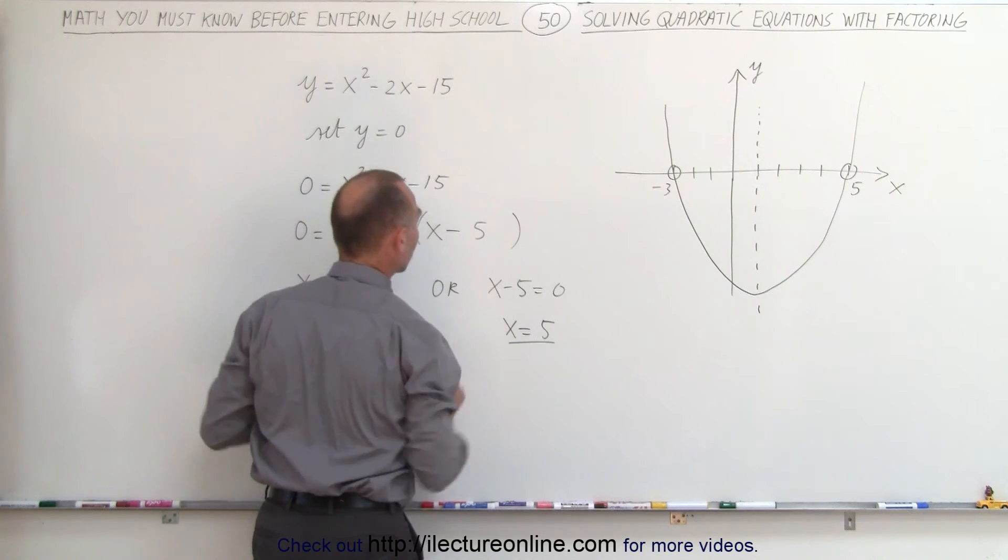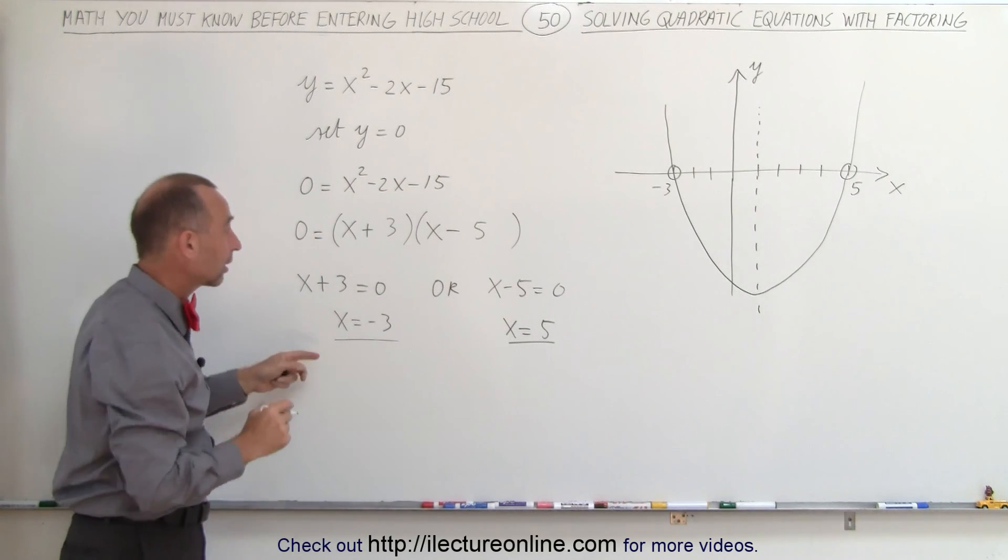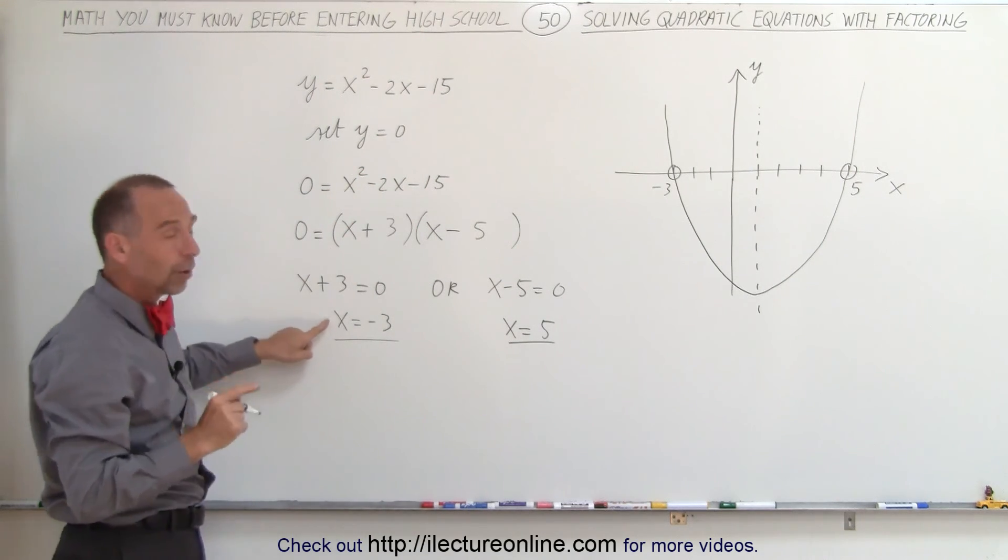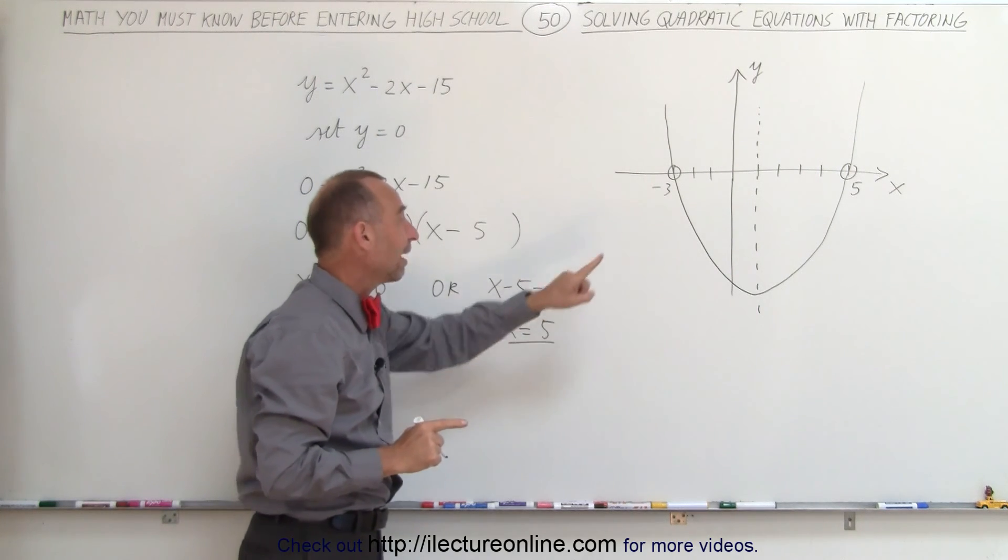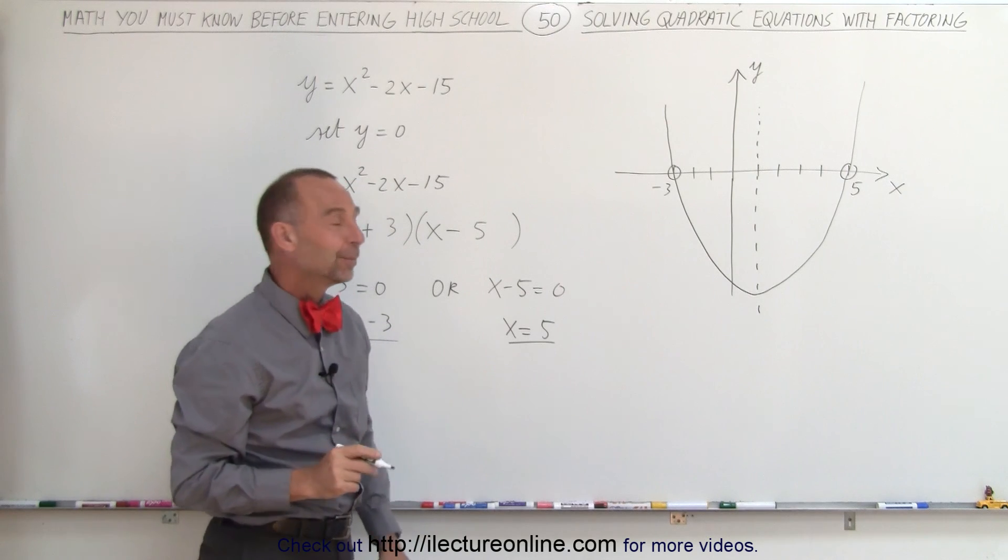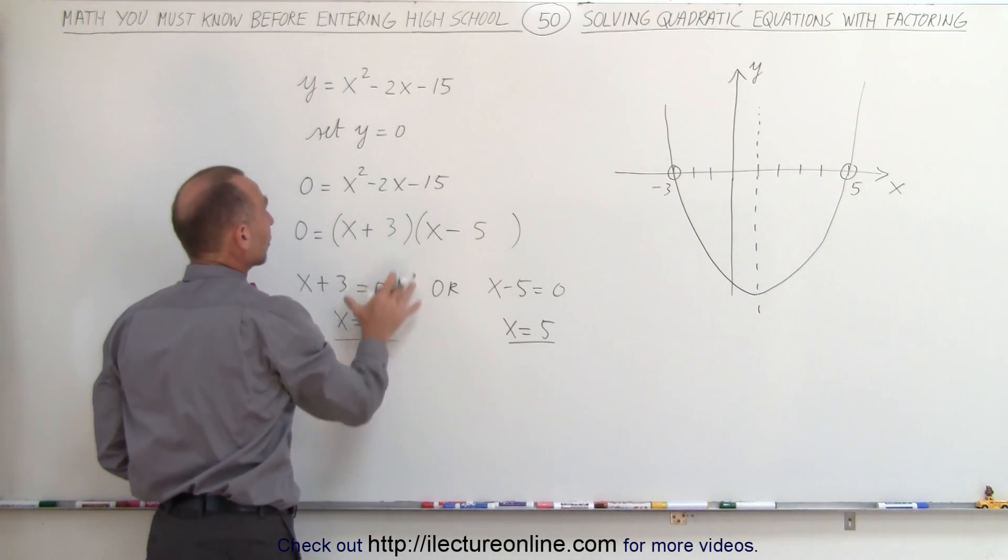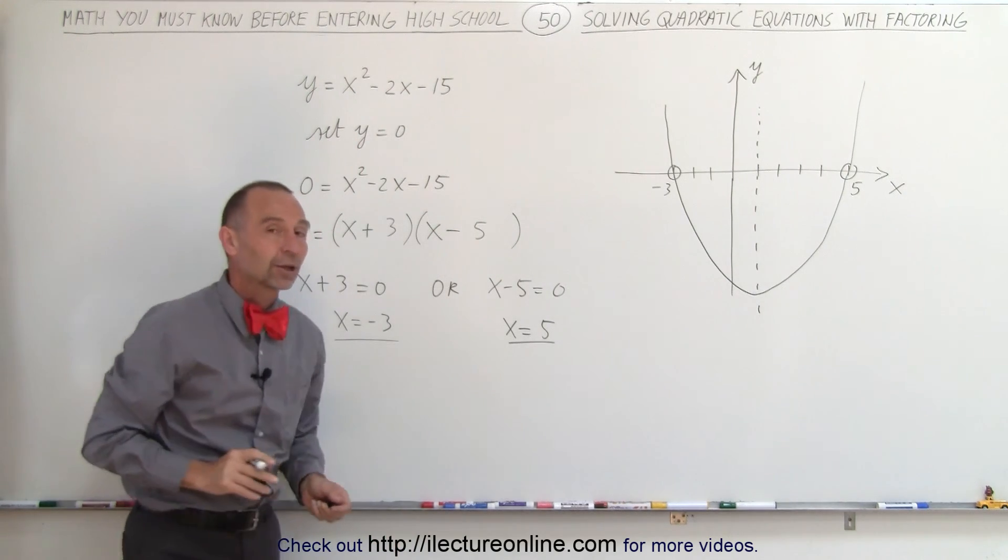This means the graph representing the equation crosses the x-axis at minus 3 and crosses the x-axis at 5, just like what we've drawn over there. And that's how we use factoring to solve quadratic equations.